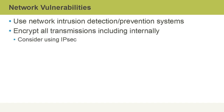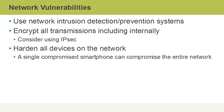We should encrypt all transmissions, including internally on our local area networks. Rather than configuring PKI certificates for every application, you might use something like IPsec, which can apply to all traffic regardless of higher-level protocol. We should also harden all devices on the network, including user smartphones, because a single compromised smartphone could compromise the entire network.